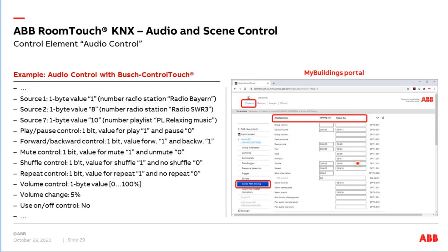Now let's go to the Control Touch configuration, done via the My Building Portal. Go to the projects menu, then the submenu 'Sonos KNX Linking', and you get a list of all your Sonos speakers. Select one Sonos speaker — for example in my office — and then you get the different group objects where you can link the group addresses. For example, 'device volume' is the percentage value received from the RoomTouch. The column for the incoming group address is what we send from the RoomTouch to the Control Touch.